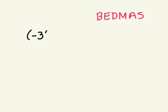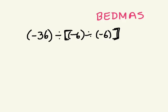So for example, let's look at the first question. Negative 36 divided by negative 6 divided by negative 6. Now, do you know why I have square brackets here? Let me explain that.